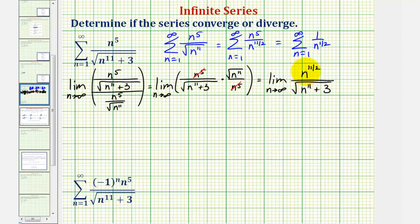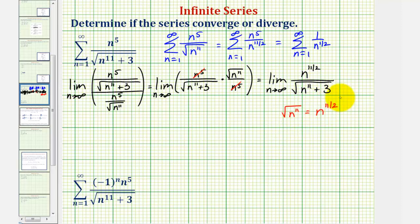Now we have the limit as n approaches infinity of n to the eleven-halves divided by the square root of n to the eleventh plus three. We can take a shortcut: as n approaches infinity, the plus three is irrelevant, so the denominator behaves like the square root of n to the eleventh, which equals n to the eleven-halves. The numerator and denominator have the same degree, so the limit equals the ratio of leading coefficients, which is one over one, or just one.